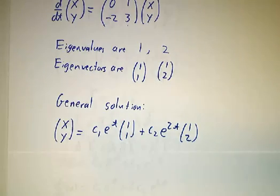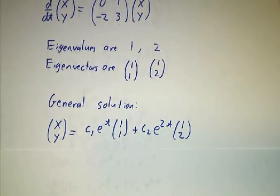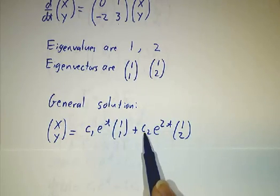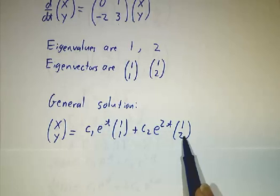And so our most general solution, using everything we know about first-order systems, is that x and y is some constant e to the t times 1, 1 plus some other constant e to the 2t times 1, 2.